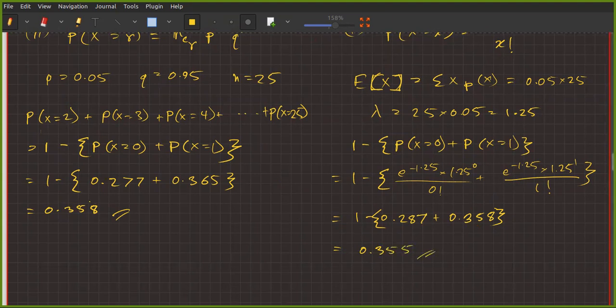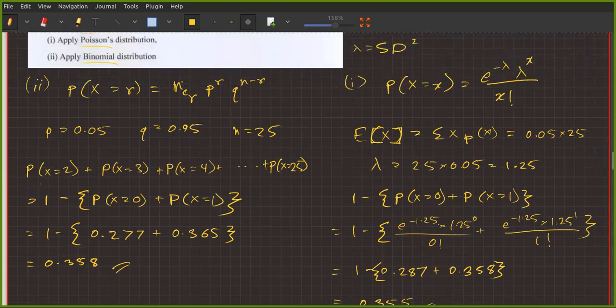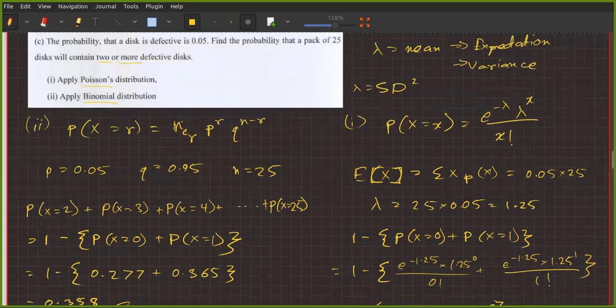Okay, so you can see the two methods give very similar answers. The Poisson distribution is basically a binomial approximation when you have a very extreme p value, so we can use Poisson instead of binomial in those cases.